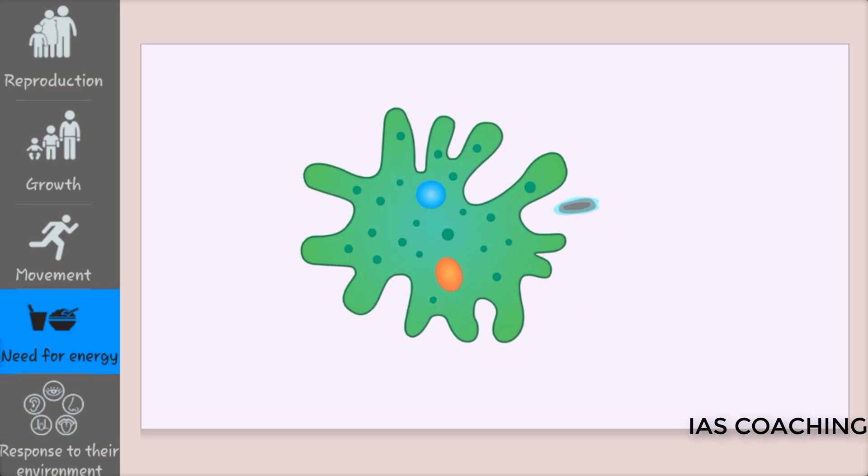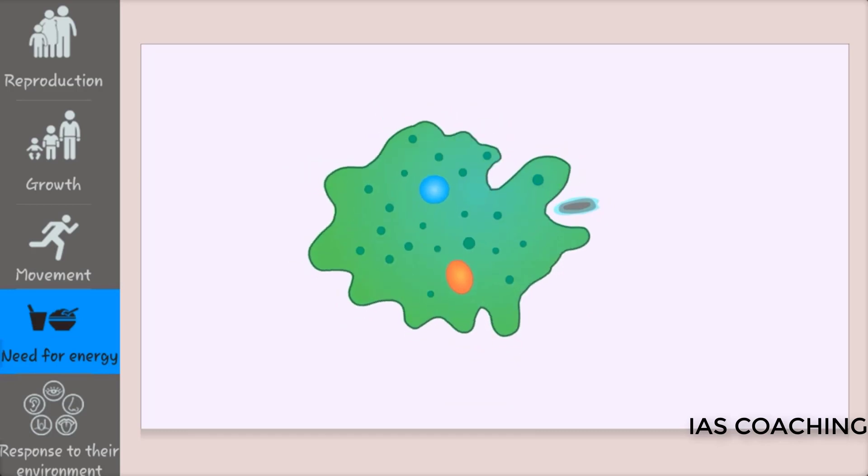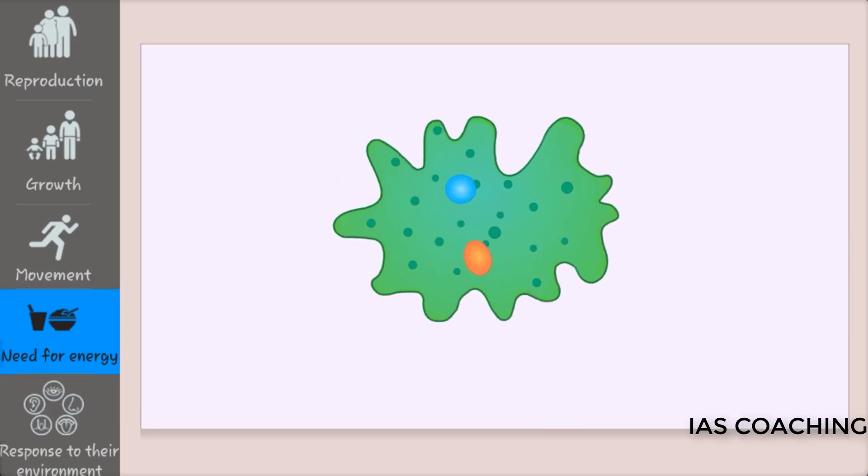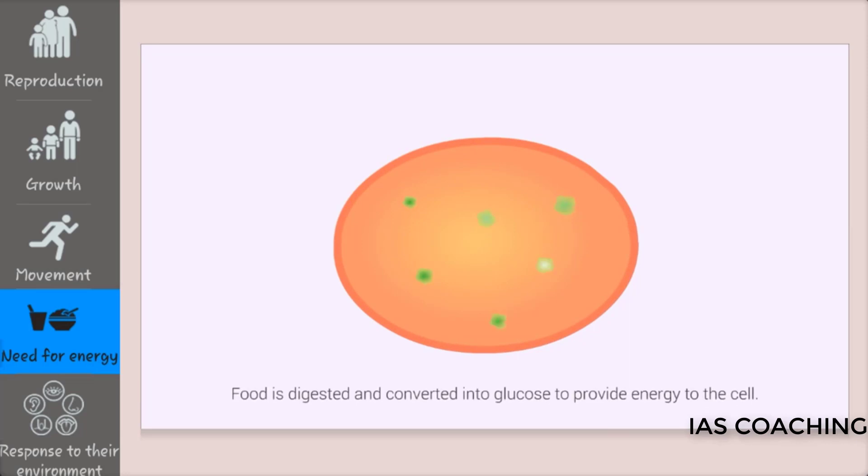A cell needs energy for its growth and development. Like in the case of an amoeba cell, once the food is absorbed by the vacuole, it is digested and broken down into smaller molecules. These molecules are further converted into glucose to provide energy to the cell.